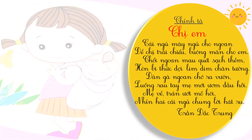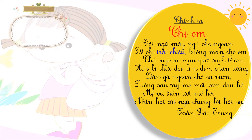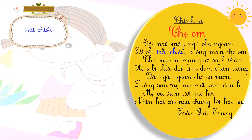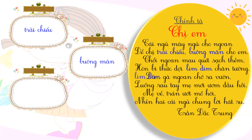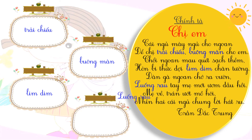Trong bài thơ này có một số từ cô nghĩ là khi viết ra các em dễ nhầm lẫn. Từ đầu tiên là từ 'trải chiếu'. Từ tiếp theo là từ 'buông màn'. Và từ tiếp theo là từ 'liêm diêm'. Cuối cùng là từ 'luống râu'.